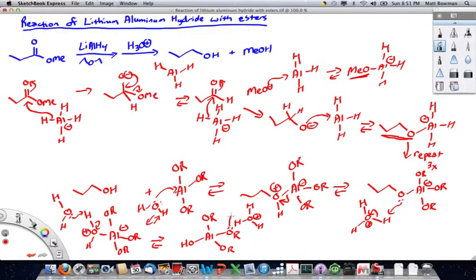And then, to one of these OR groups, which then fall off. Gives you this alcohol, which could be methanol or propanol, depending on what the group actually is.